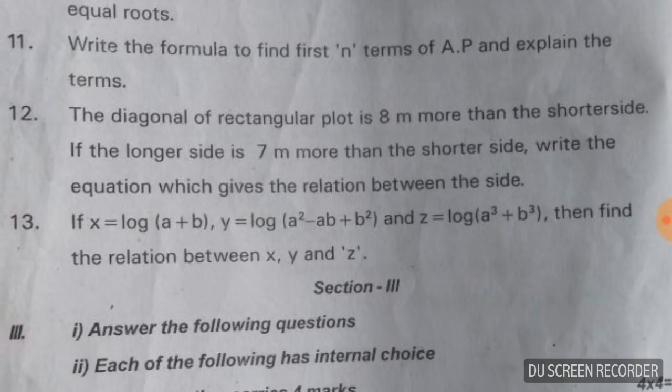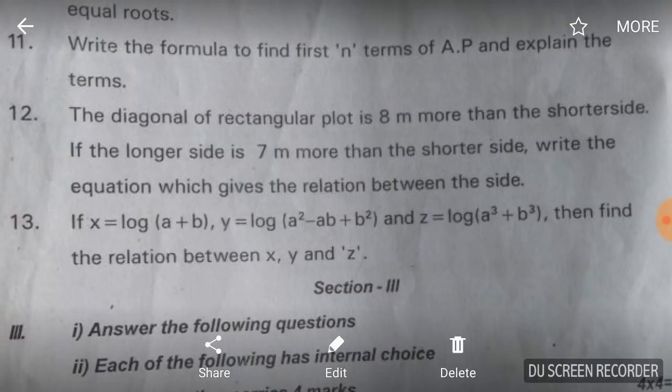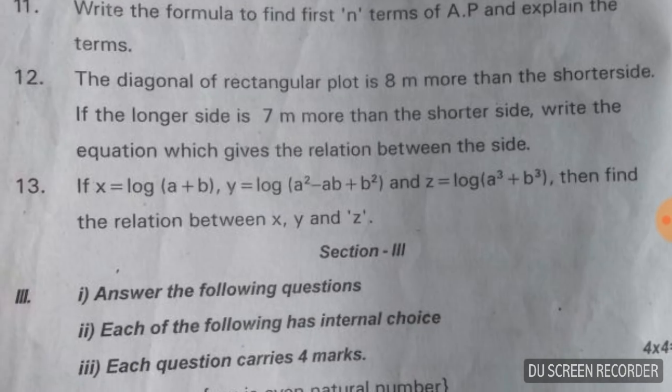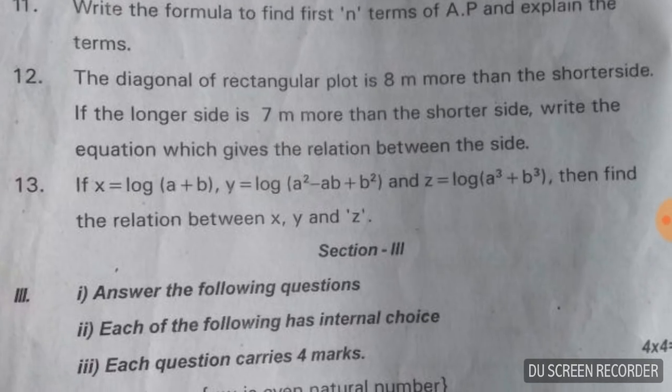Write the formula to find the sum of the first n terms of an AP and explain the terms. The sum of the first n natural numbers is n(n+1)/2. The sum of n terms of an AP is (n/2)[2a + (n-1)d], where a is the first term, d is the common difference, and n is the number of terms.